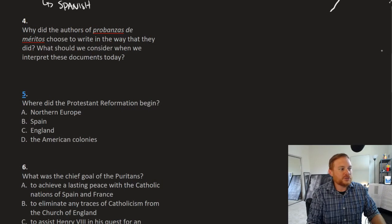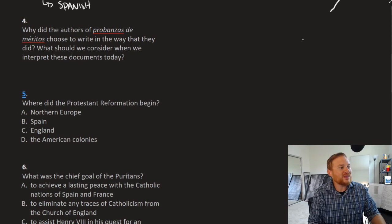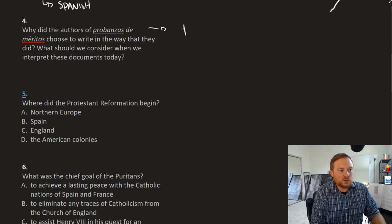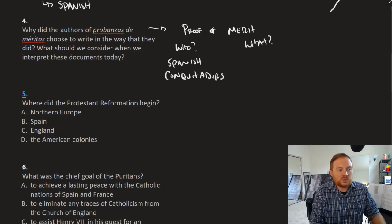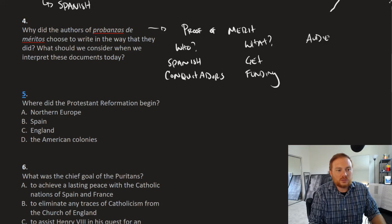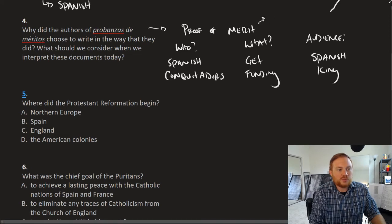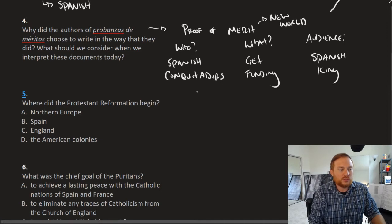Question number four, why did authors of probanza de meritos choose to write in the way they did? What should we consider when we interpret these documents today? First of all, recall that these are proof of merit. Who wrote them? It was Spanish conquistadors. What was the purpose? Get funding. And who was the audience? It was the Spanish king. These proof of merits describe the New World, written by the Spanish conquistadors, intended for the Spanish king in an effort to get money.